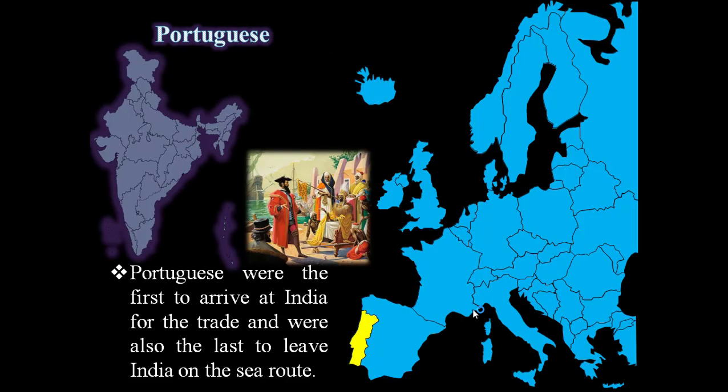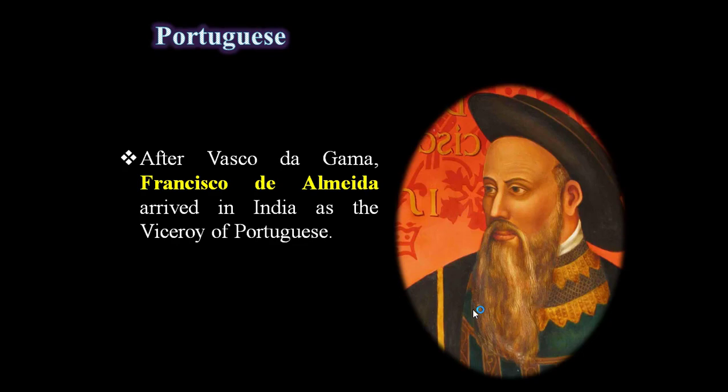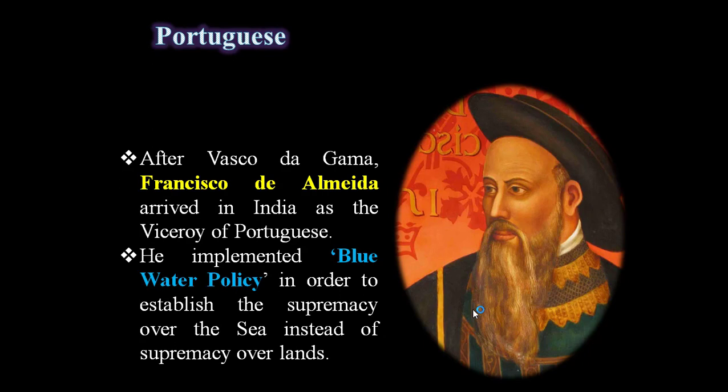Portuguese were the first to arrive in India for trade and were also the last to leave India. Vasco da Gama was the first to reach India after discovering the sea route. After Vasco da Gama, Francisco de Almeida arrived in India as the Viceroy of the Portuguese. He implemented the Blue Water Policy, establishing Portuguese supremacy over the sea instead of supremacy over the land.